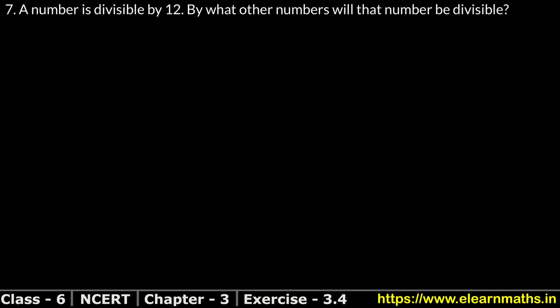Let's do question number 7 now. Question number 7 is: a number is divisible by 12. By what other numbers will that number be divisible? So let's find out which numbers 12 is divisible by — we take out the factors of 12.